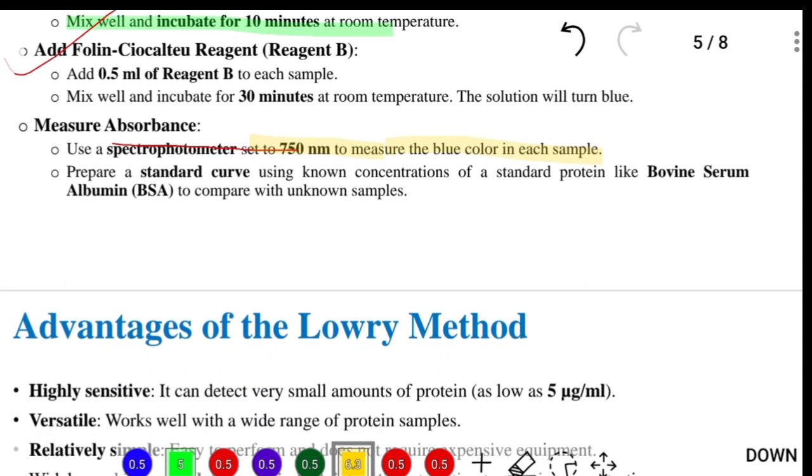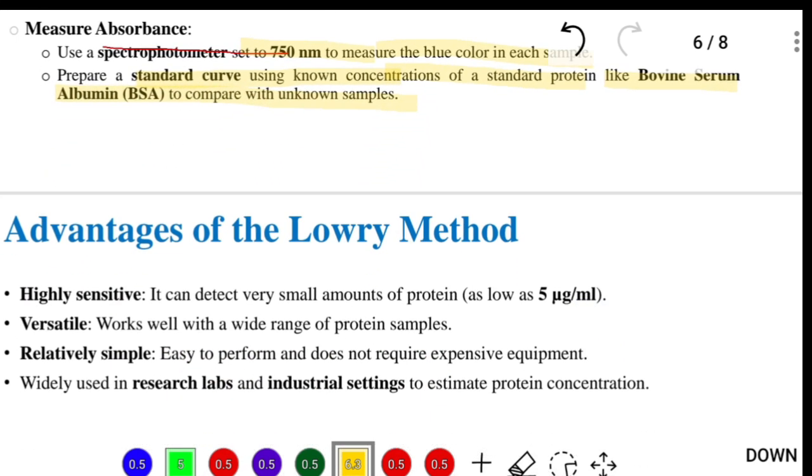After that, we have to prepare a standard curve using different concentrations of standard protein and optical density at 750 nanometers by using a spectrophotometer. Then calculate the protein concentration so you know how much concentration is present in your sample. Standard protein like BSA, bovine serum albumin, is used to compare with unknown samples.